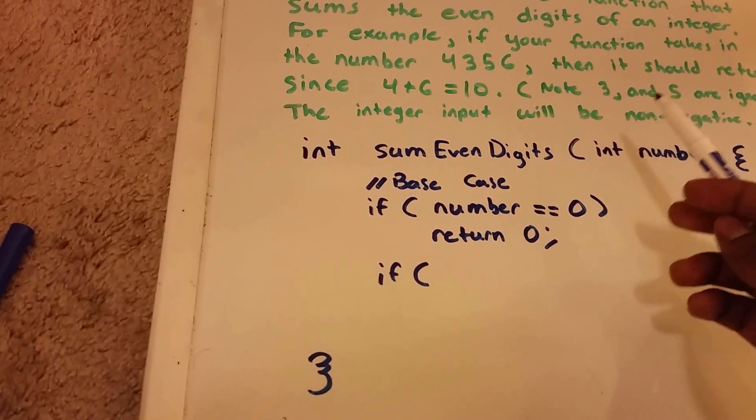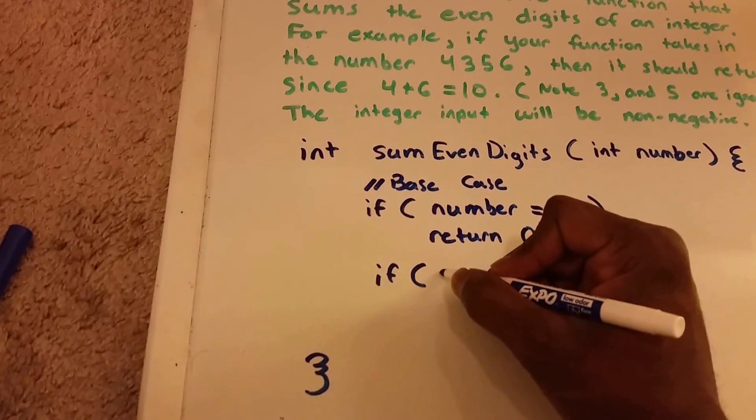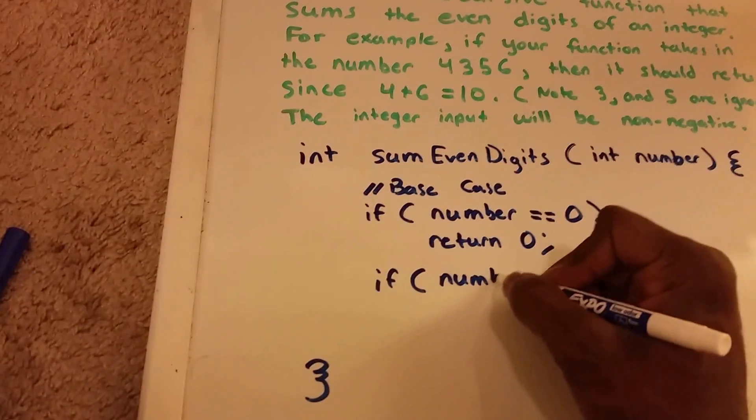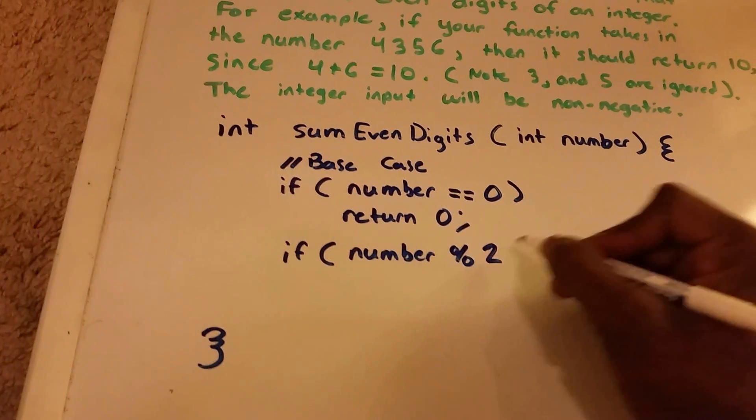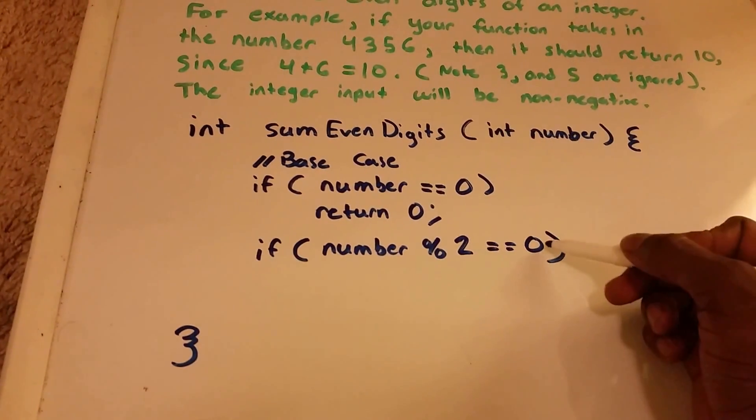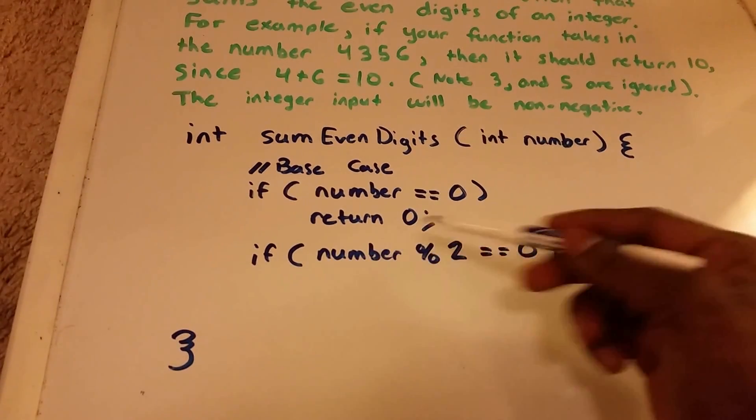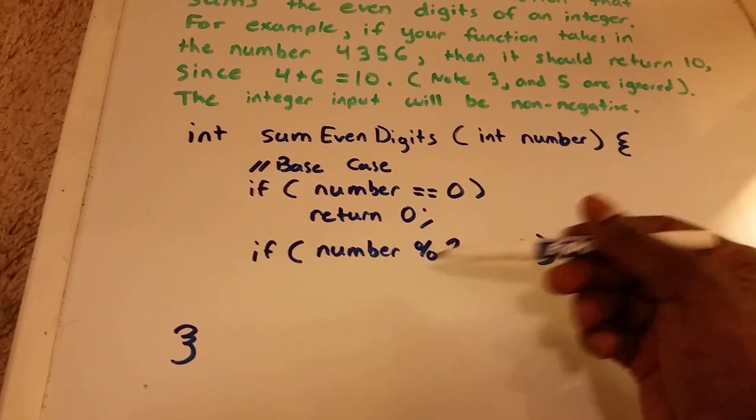We need to know when the number is even. If the number mod 2 is zero, then it's even. And if number mod 2 is one, then it's odd. In this case, we know that it's even.